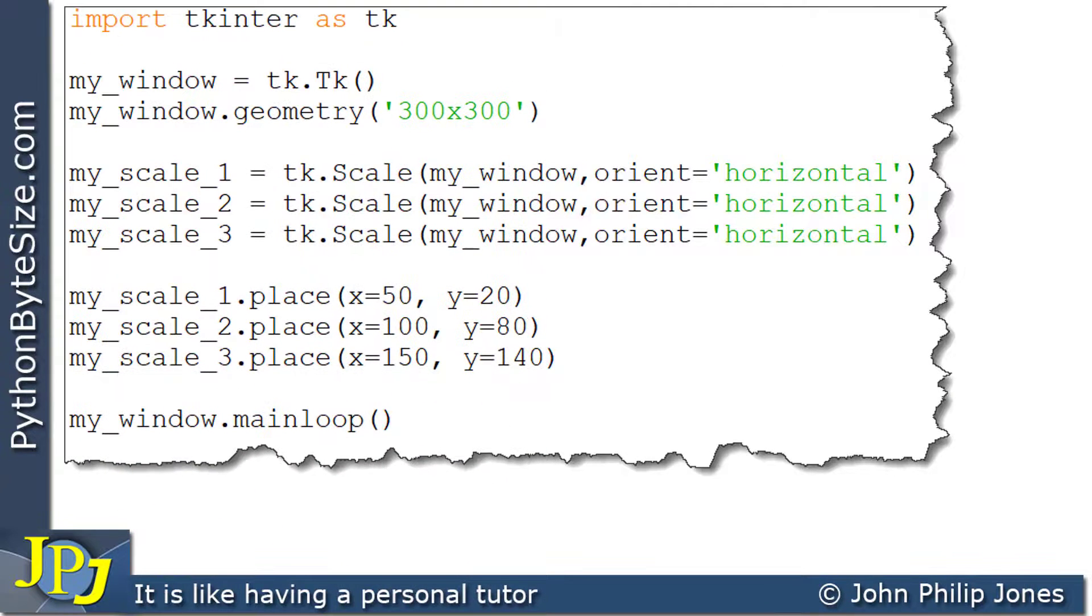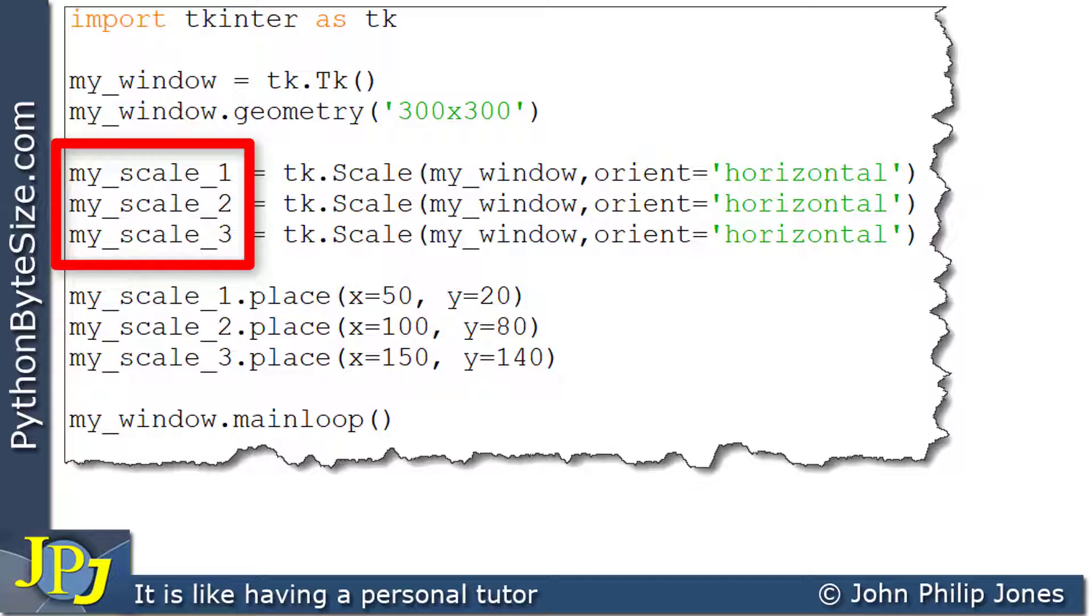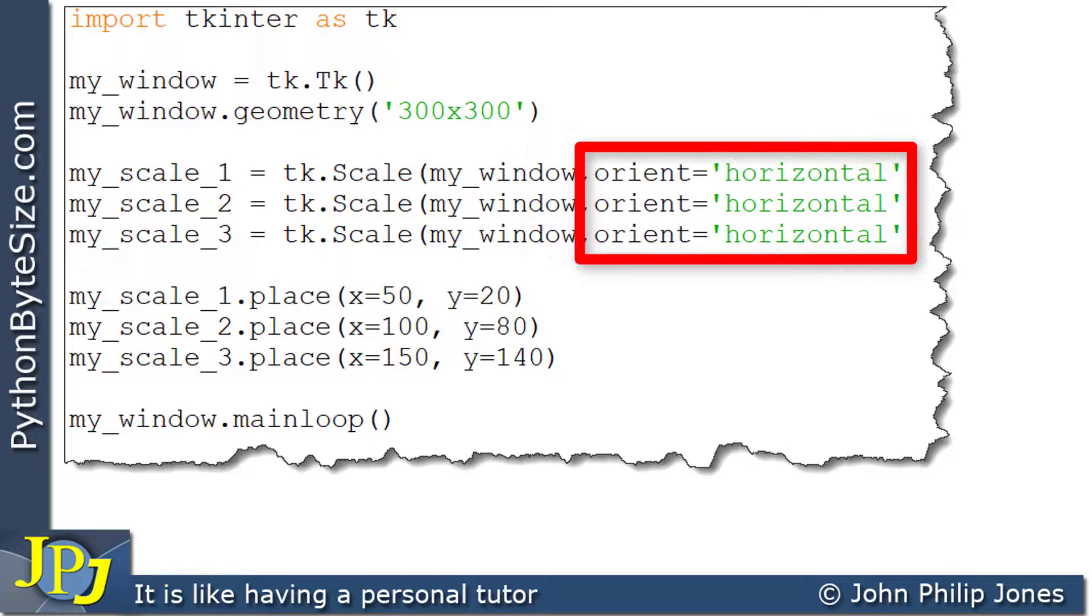If we look at this computer program, you can see here I've made three scale widgets, each appropriately named. We can see that we've invoked this to create each of the widgets. They're going to be associated with the window created above, and here you can see I'm making the orient horizontal.